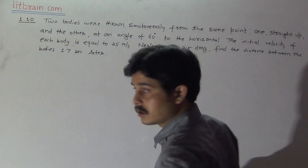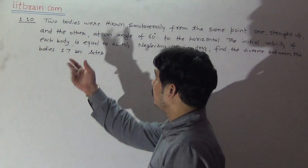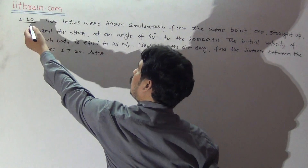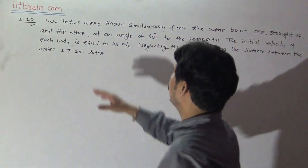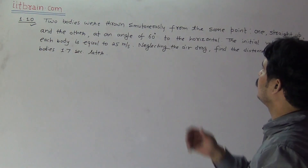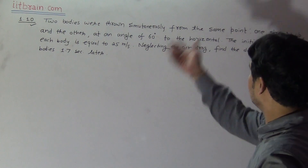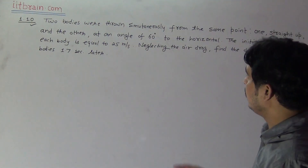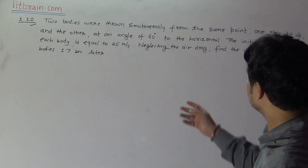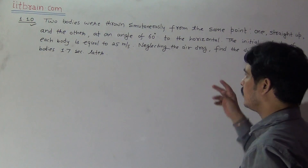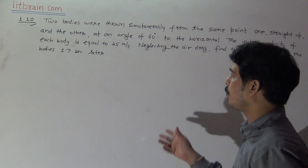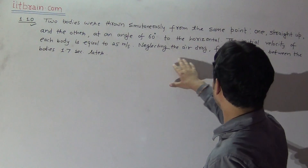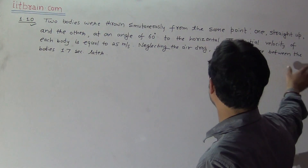Hello students, this is problem 1.10 — the first chapter, 10th question of I.E. Irodov. The question is: two bodies were thrown simultaneously from the same point; one is straight upward and the other at 60 degrees to the horizontal. The initial velocity of each body is equal to 25 meters per second. Neglecting air resistance, find the distance between the bodies at 1.7 seconds.